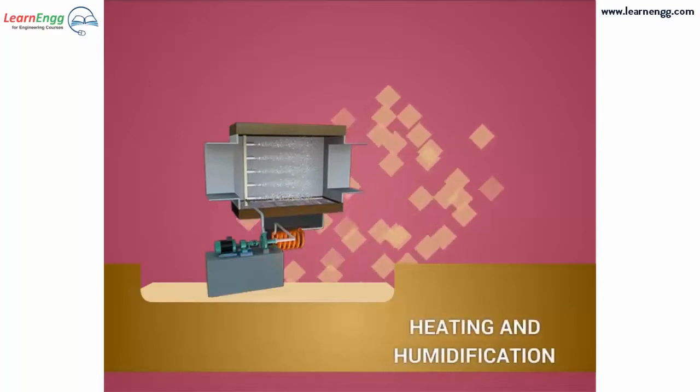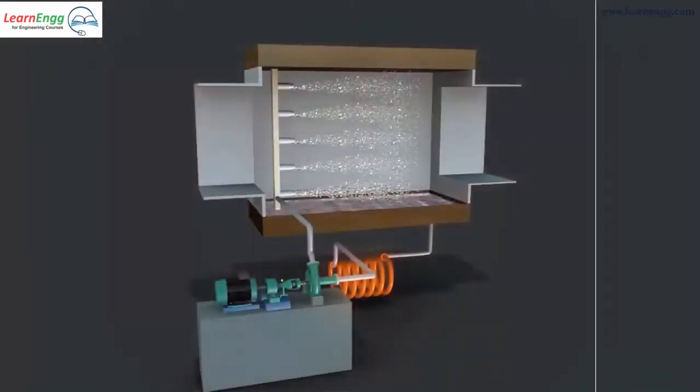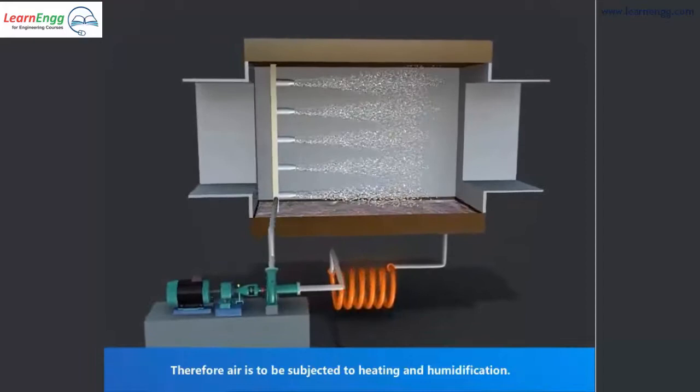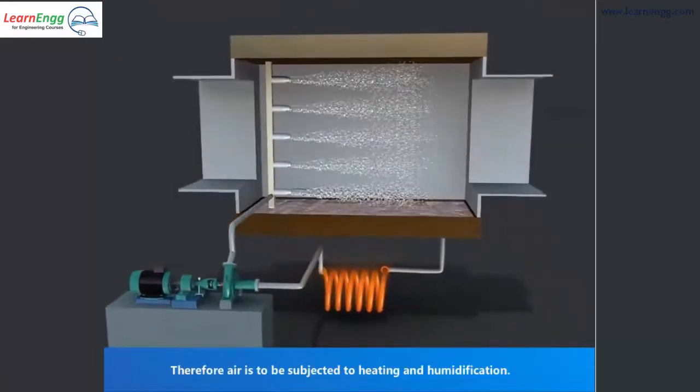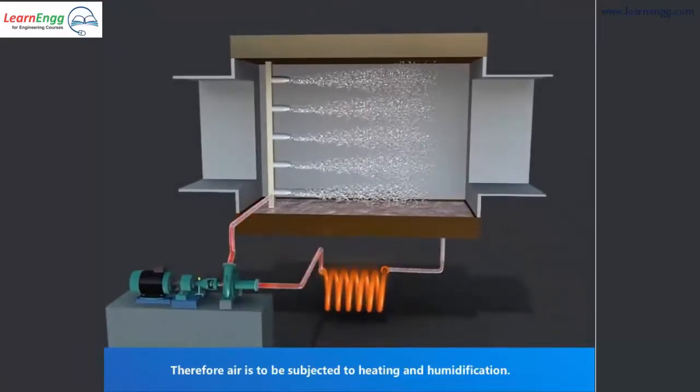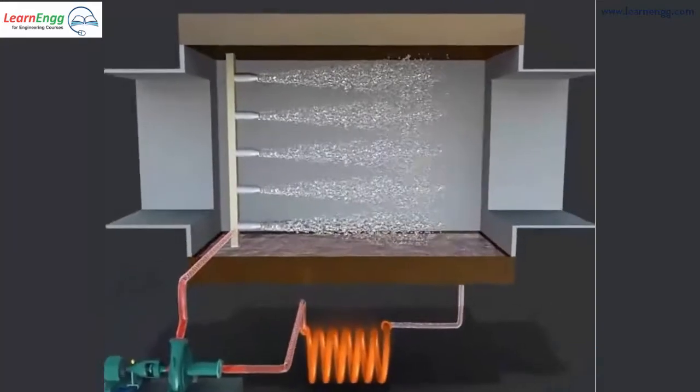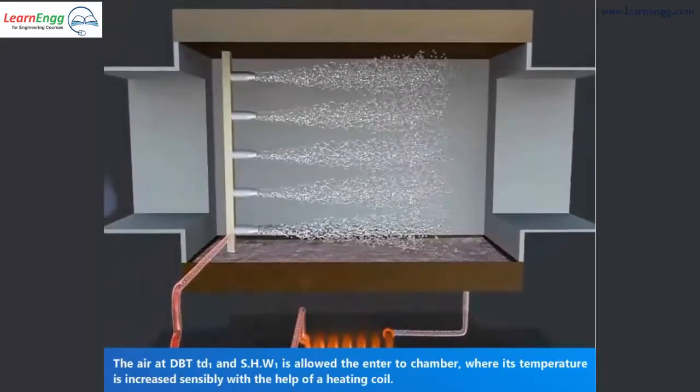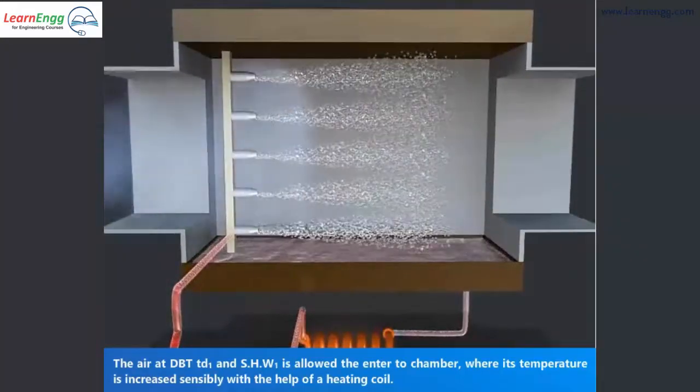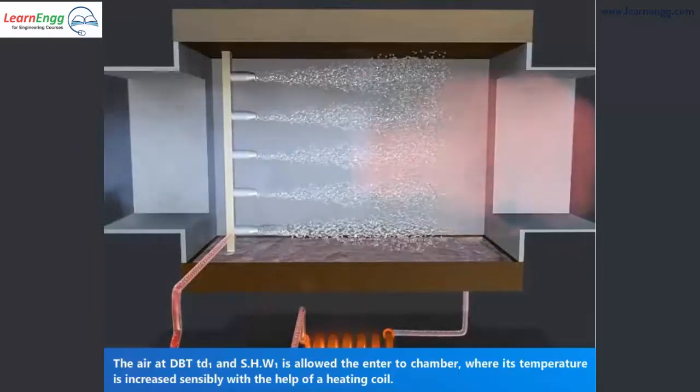Heating and humidification is used in winter air conditioning. In winter, moisture content and temperature of air are considerably less, therefore air is to be subjected to heating and humidification. The air at dry bulb temperature TD1 and specific humidity W1 enters the system.